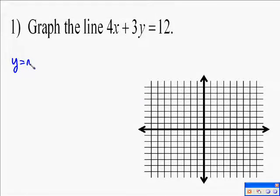The following video asks us to graph the line 4x plus 3y equals 12. To do this, we're going to use the slope-intercept form of a line, which is y equals mx plus b.